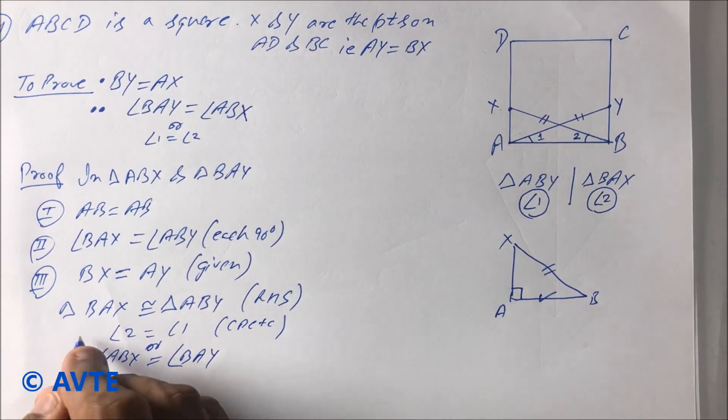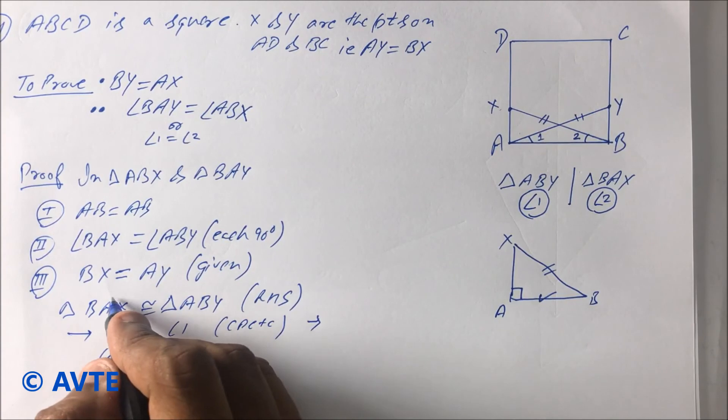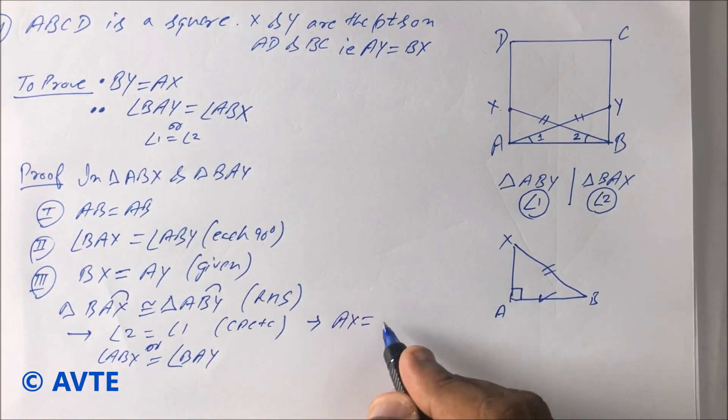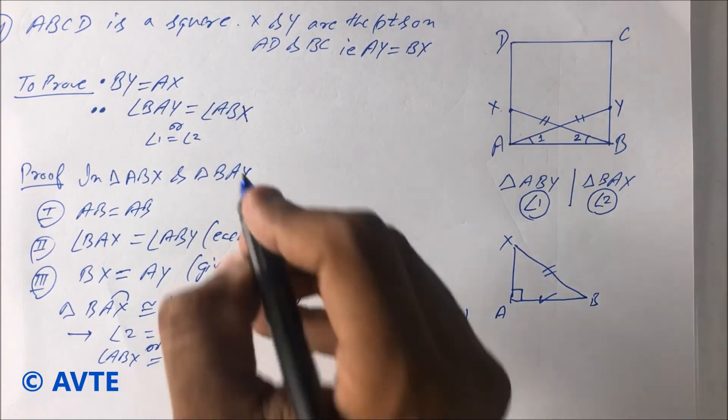This is your first CPCTC, and your second CPCTC is, you just check it out: AX is equal to BY. CPCTC. So both are proved.